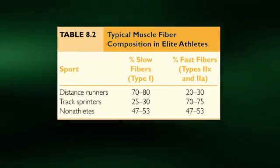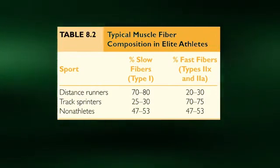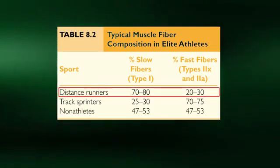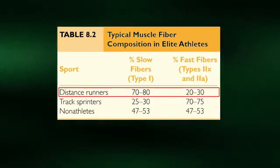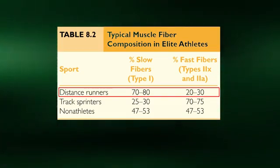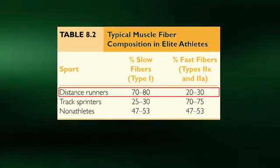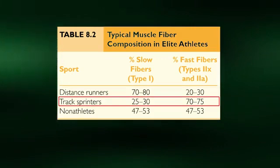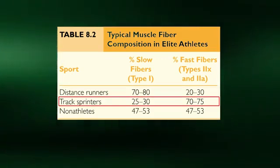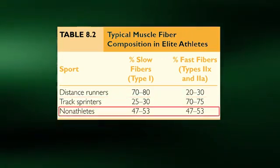When we examine the fiber type composition of elite athletes, it is not surprising to find that distance runners have a much greater percentage of type 1 muscle fibers, and a lower percentage of both type 2X and type 2A fibers. The type 1 fibers are ideal for distance athletes who compete at submaximal exercise intensities for extended periods of time. On the other extreme, sprinters who repeatedly engage in high-power explosive exercise have a much greater percentage of both type 2 fibers.